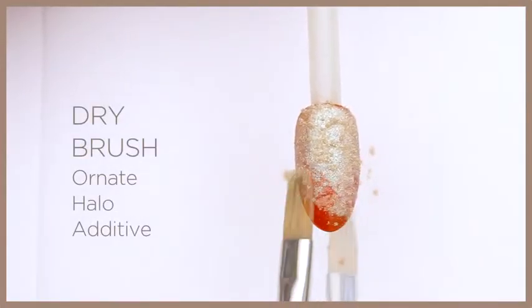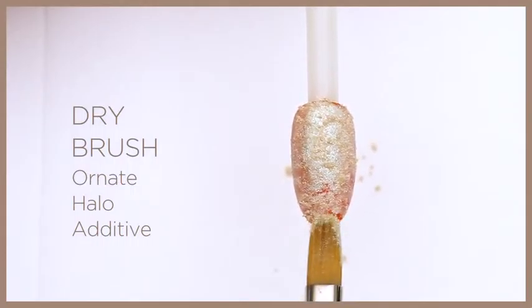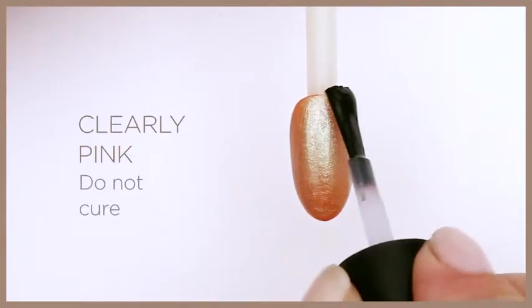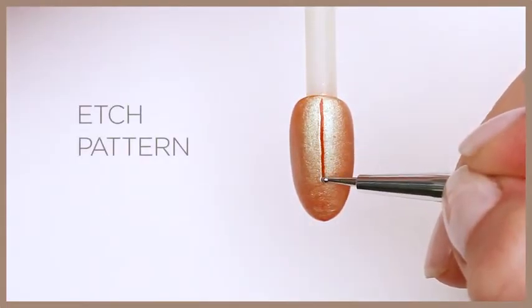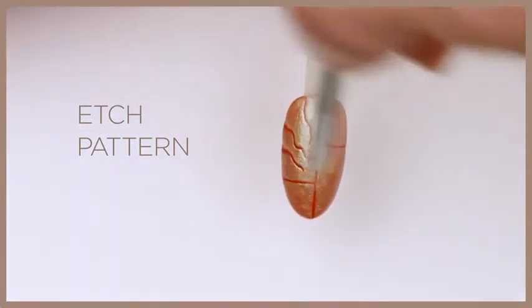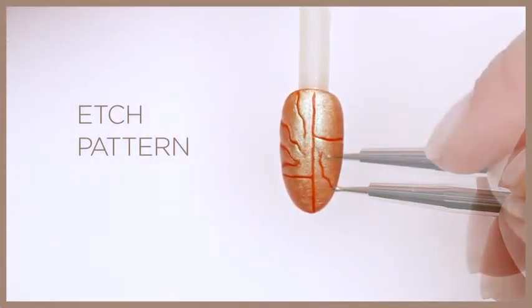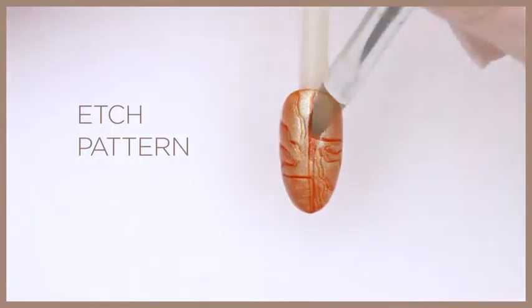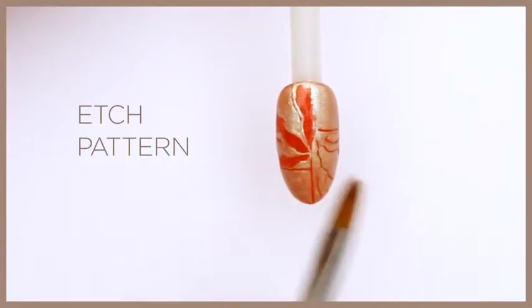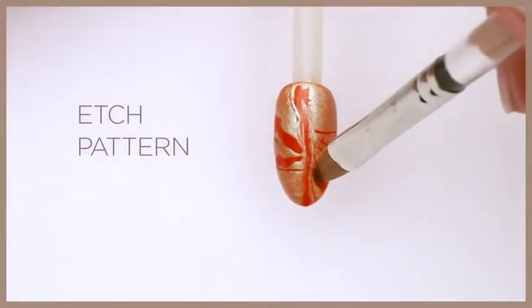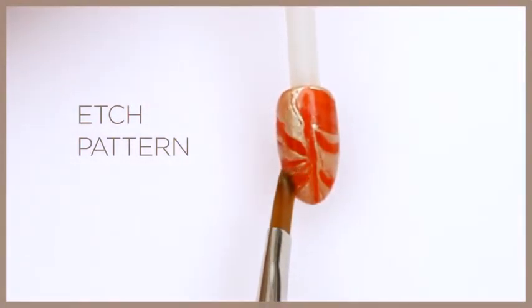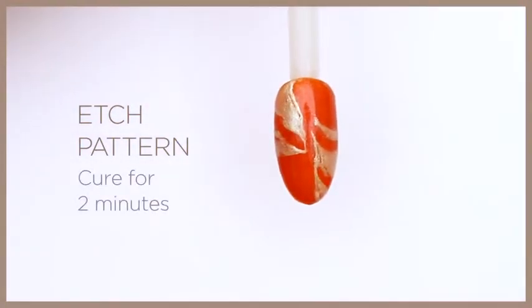Use a dry gel brush to apply a thin layer of Clearly Pink but do not cure. Etch out the desired pattern over the top left and bottom right side of the nail. Use the tip of the gel brush lightly moistened with IPA to remove excess additive, revealing the pattern. Cure for two minutes.